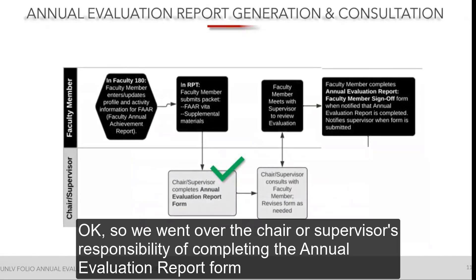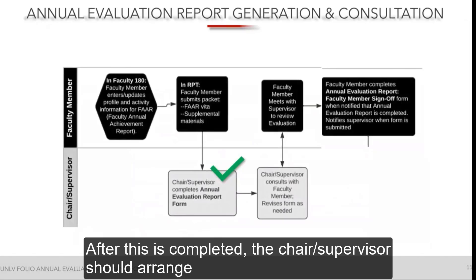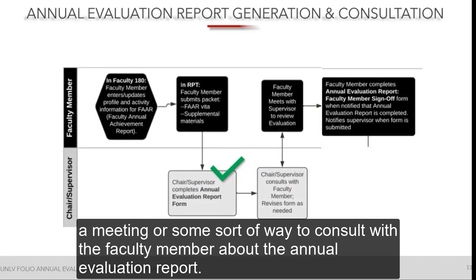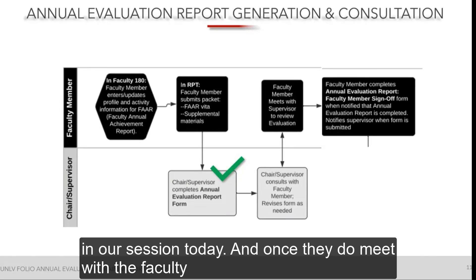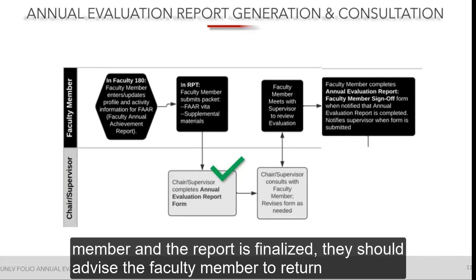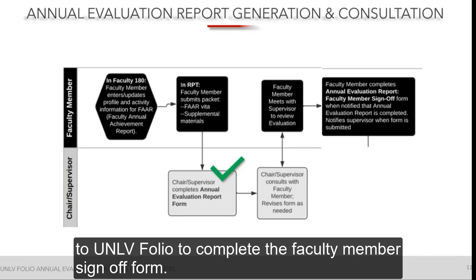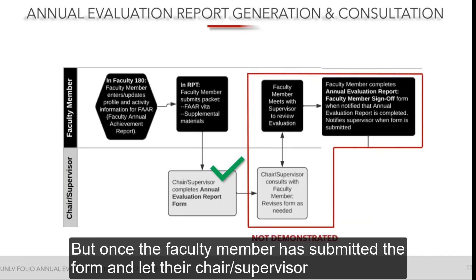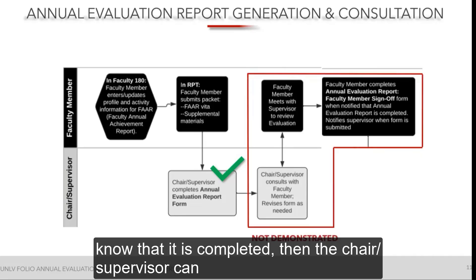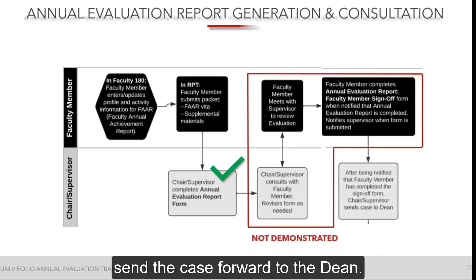After the chair or supervisor completes the annual evaluation report form, they should arrange a meeting or some way to consult with the faculty member about the report. Since this is at the discretion of the chair or supervisor, it won't be covered further here. Once they meet with the faculty member and the report is finalized, they should advise the faculty member to return to UNLV Folio to complete the faculty member sign-off form. Once that's done and the faculty member lets the chair or supervisor know, the chair or supervisor can send the case forward to the dean.